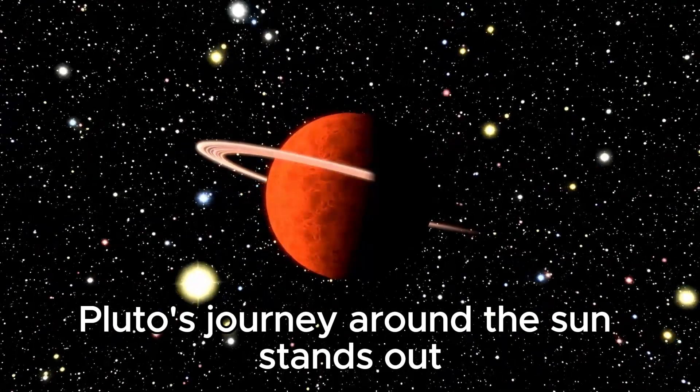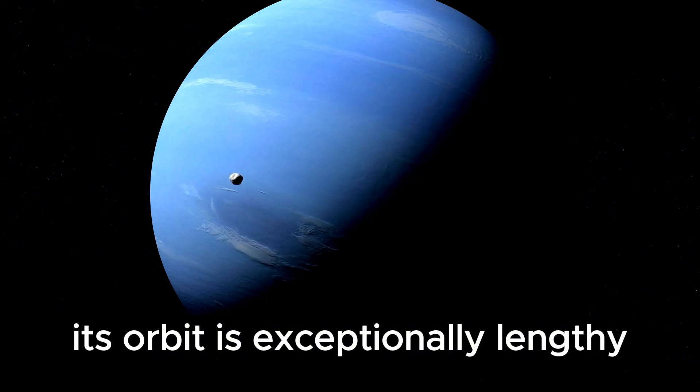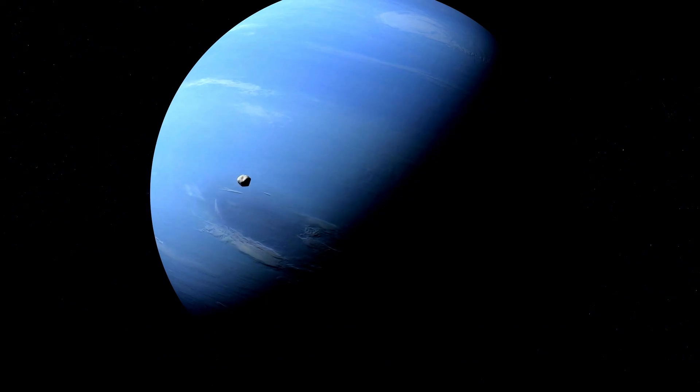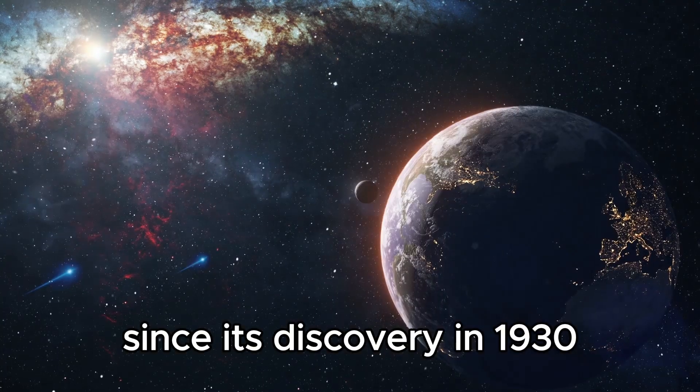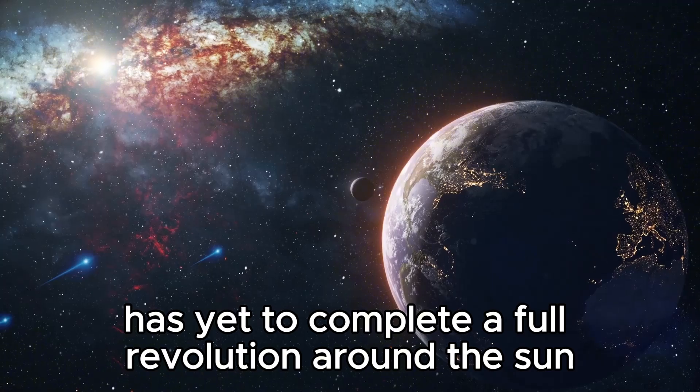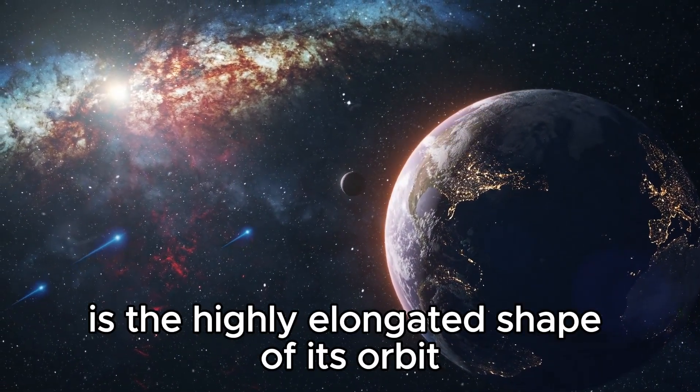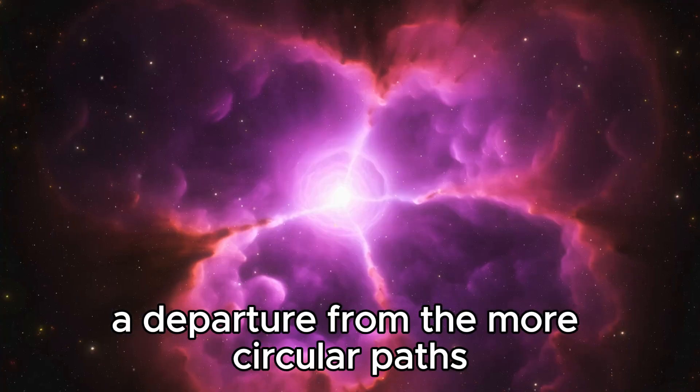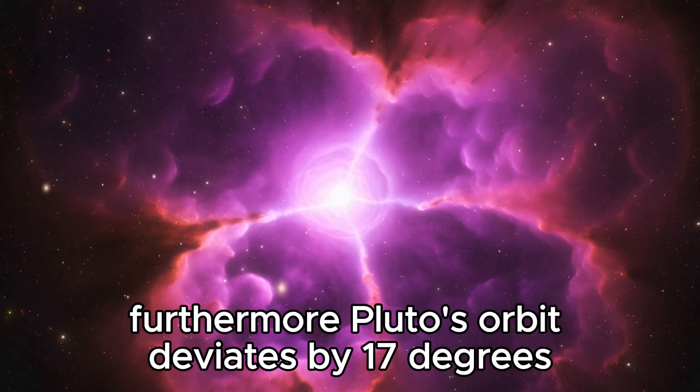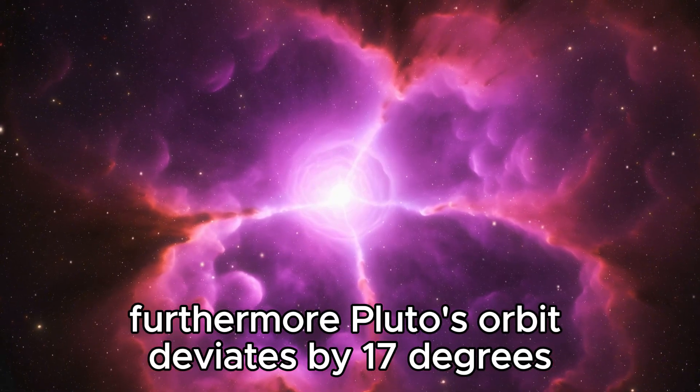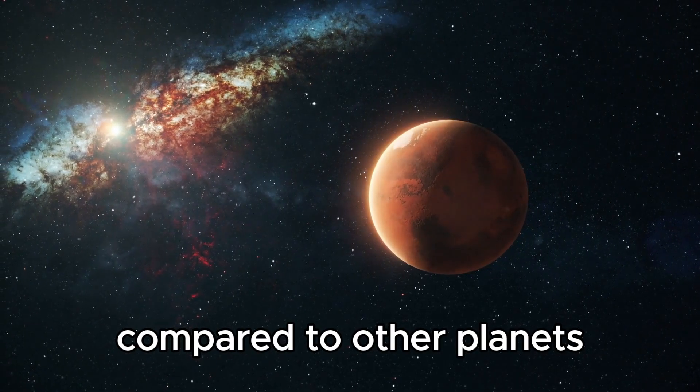Pluto's journey around the Sun stands out due to its unique characteristics within our solar system. Its orbit is exceptionally lengthy, spanning a staggering 248 years. Since its discovery in 1930, Pluto has yet to complete a full revolution around the Sun. Adding to its mystique is the highly elongated shape of its orbit, a departure from the more circular paths followed by the major planets. Furthermore, Pluto's orbit deviates by 17 degrees from the ecliptic plane, giving its path a steeper incline compared to other planets.